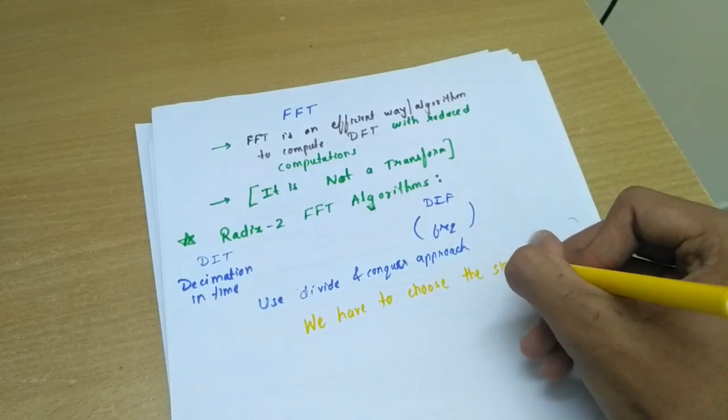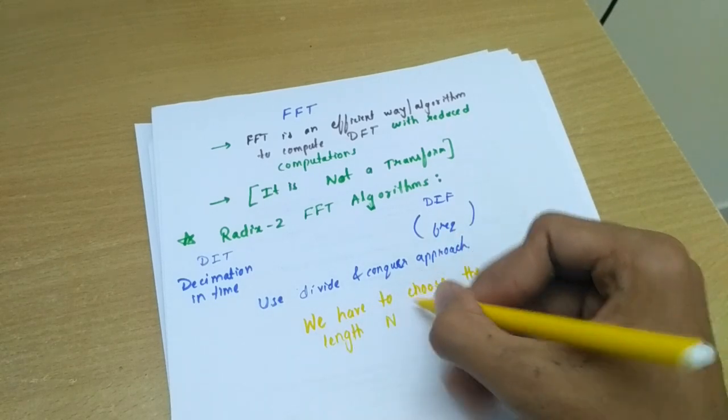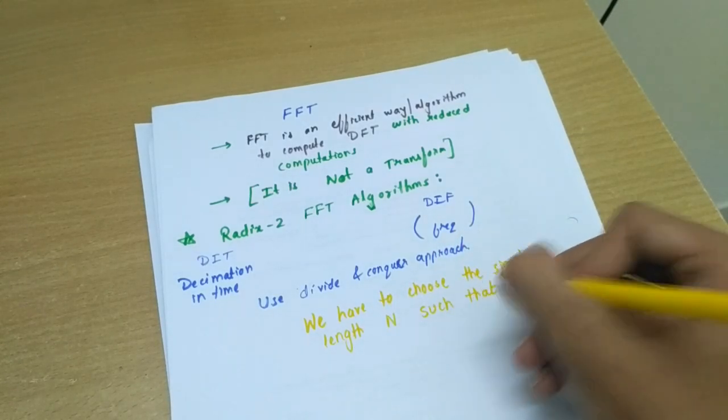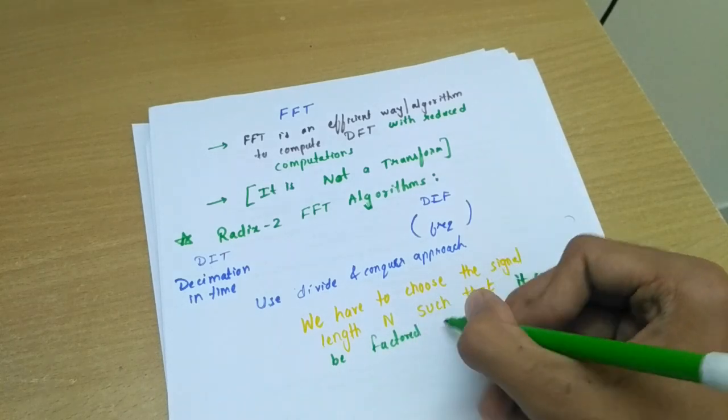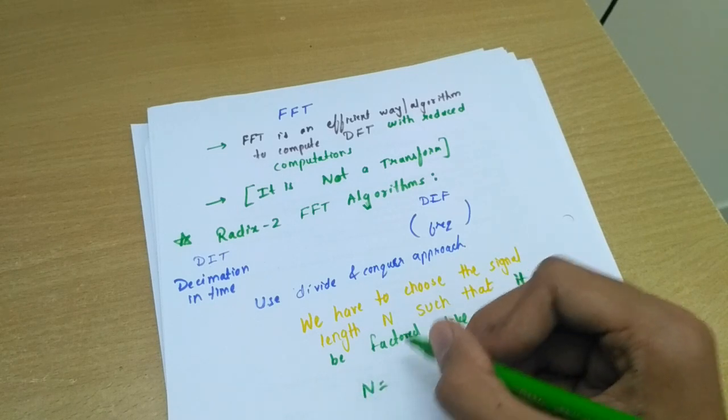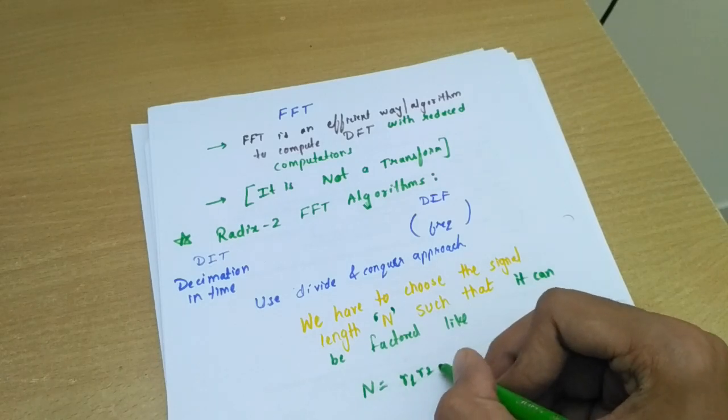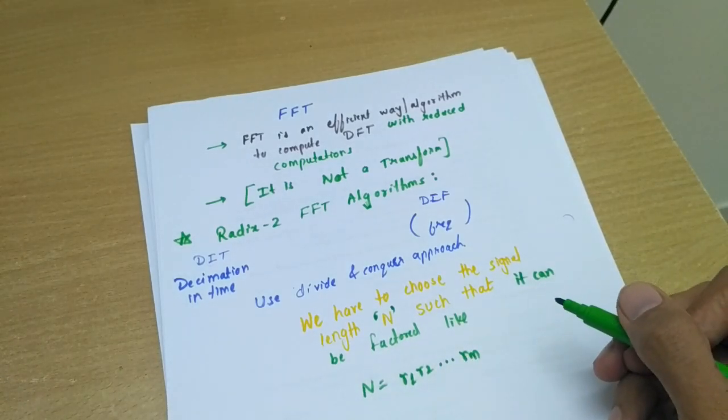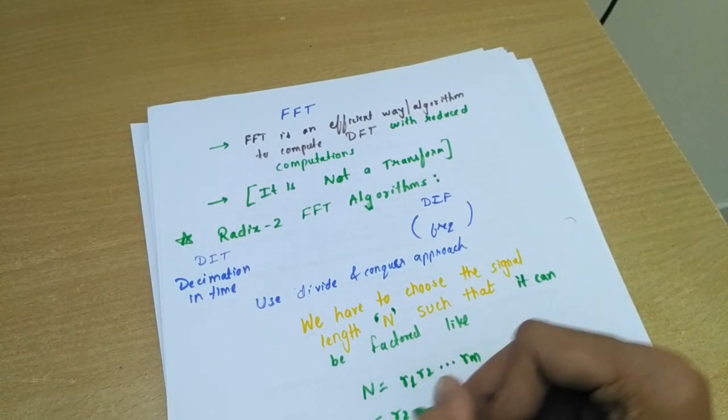It can be factored like N equals, where N denotes the length of the signal, that is R1, R2 up till Rm. If these factors are equal, now if all the factors that is R1 equals R2 and so on, then simply we can write N equals R raised to m.